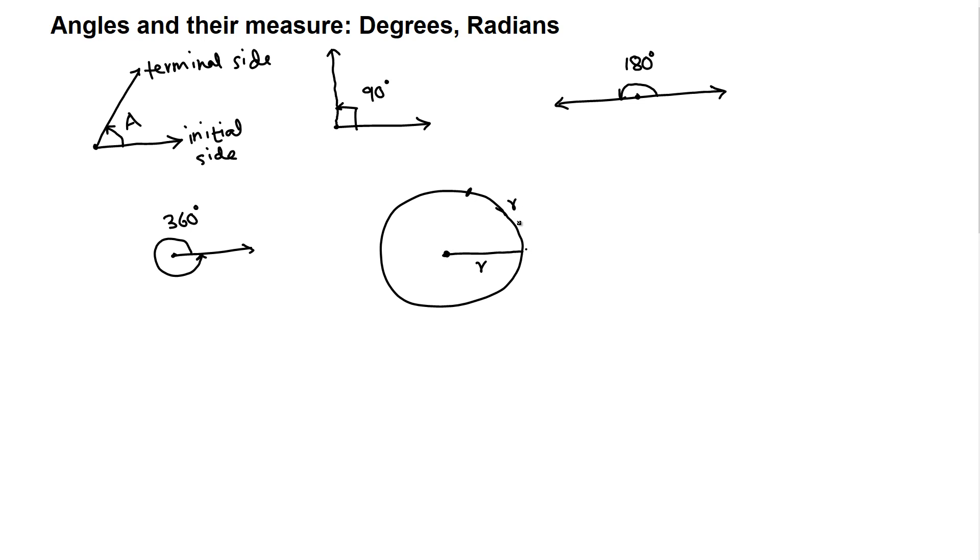If we connect this, then we have a central angle here. This length is R, and this is also R. If we measure this arc length on the circumference as R, then this angle is one radian. This is how one radian is defined.